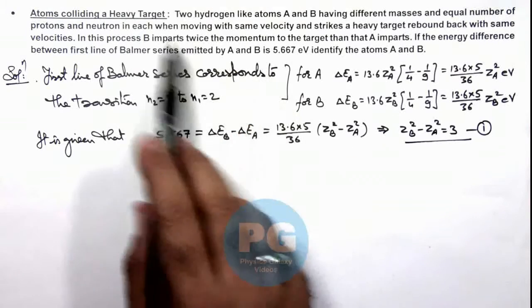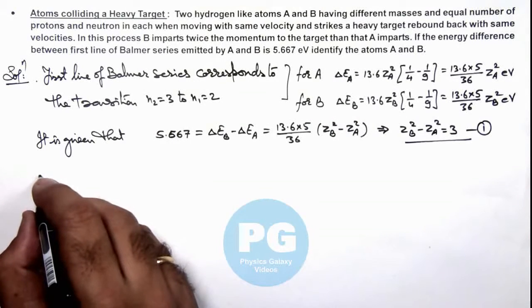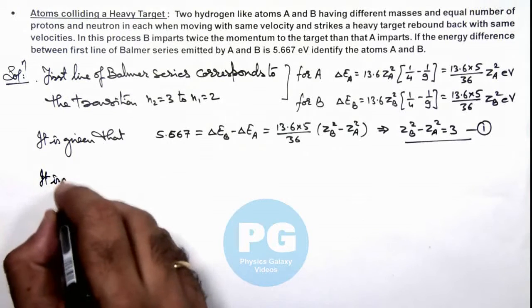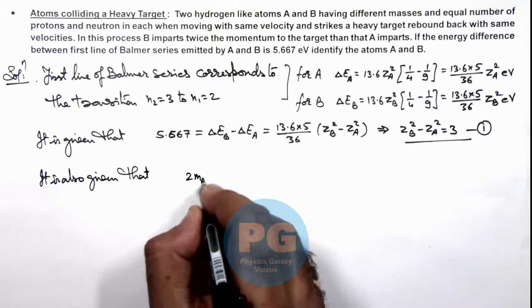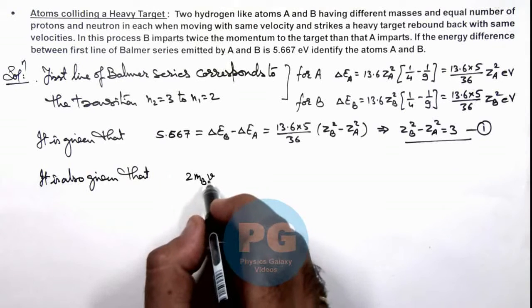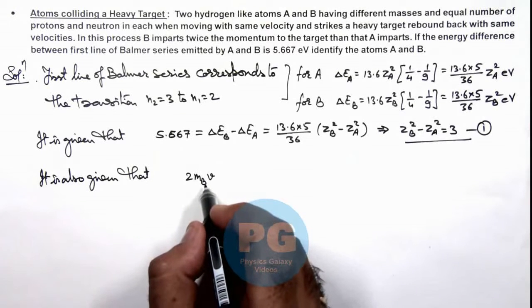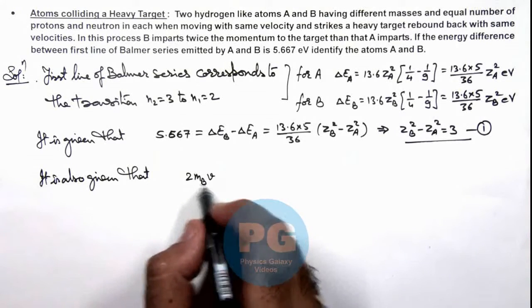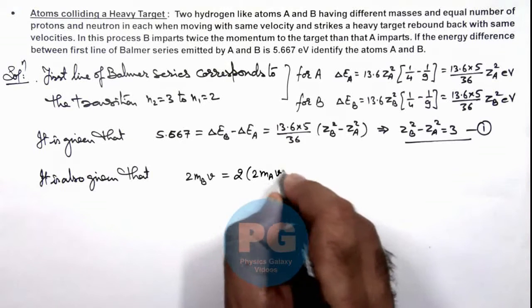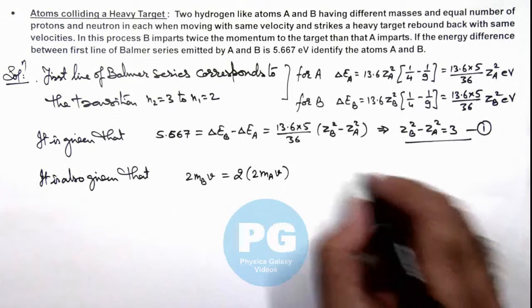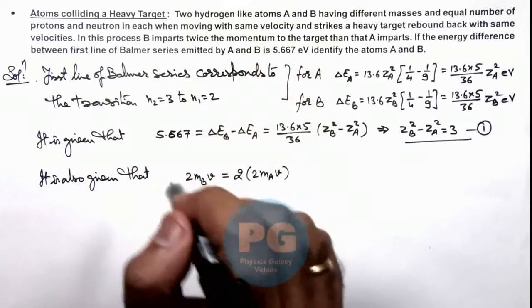We are also given that B imparts twice the momentum to the target than A imparts. We can write that twice of mᵦv, which is the momentum imparted when atom B strikes a target and rebounds with the same speed, so its initial momentum was mᵦv and on rebounding the imparted momentum will be twice of mᵦv, which is equal to twice of twice of mₐv. Now in this situation, as we are given that number of protons and neutrons in each of these are equal.